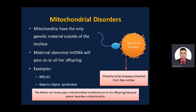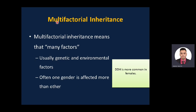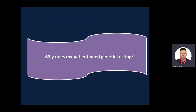Another form of inheritance is multifactorial inheritance, meaning there are many factors — both genetic and environmental. Often one gender is affected more than the other; for example, developmental dysplasia of the hip (DDH) is more common in females than males.